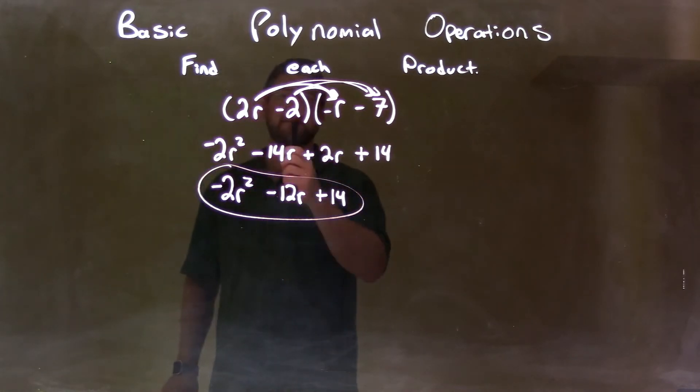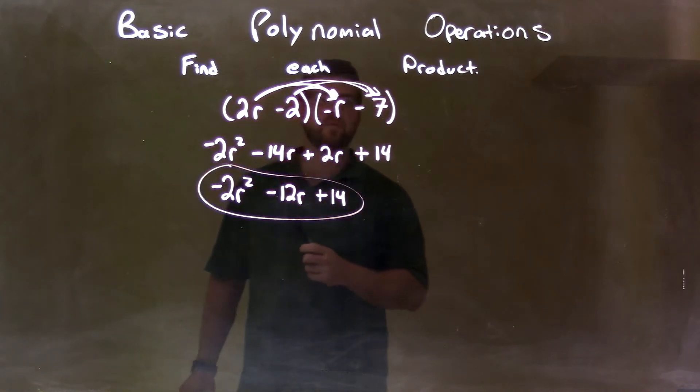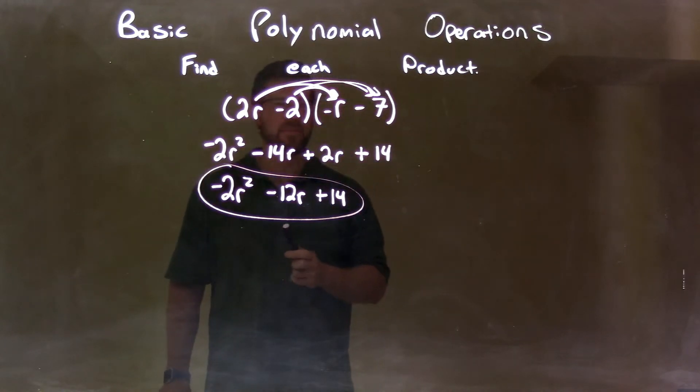Let's recap. We're given 2r minus 2 times negative r minus 7. All parts of the first parenthesis multiplied by all parts of our second parenthesis.